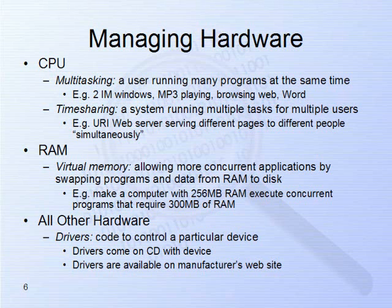99.9% of the time, the computer is doing nothing — CPUs are that powerful. Operating systems take advantage of this by allowing multiple things to run concurrently. There's only one CPU and it can only do one instruction at a time, so at any instant the CPU is doing one little part of one application. It can do billions of instructions per second, so it switches among different applications — reading a keystroke for Word, then switching to the MP3 player to play a note.